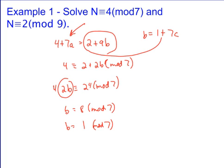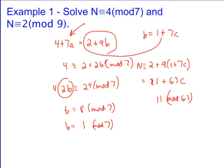Once you get that, you plug it back into this. And so you get n is equivalent to 2 plus 9 times 1 plus 7c. So that's going to give you 11 plus 63c. So my answer is going to be 11 mod 63.